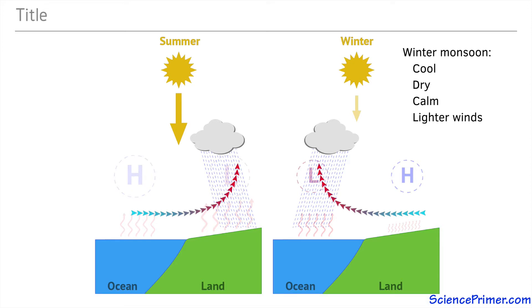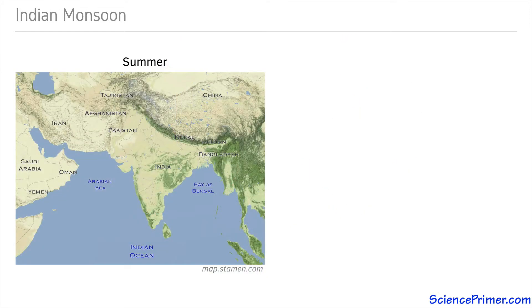These figures give a good representation of the dynamics that cause the monsoon cycle, but it is important to understand the scale of these patterns. These are large patterns occurring across huge areas.